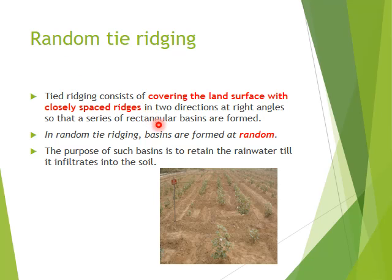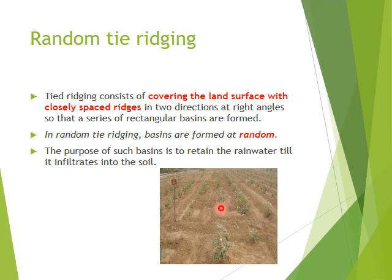The next one is random tie ridging. The word 'random' means without any orderliness. In random tie ridging, ridges are formed with the help of soil, and these ridges are connected — 'tying' means connecting — in a random manner. Small basins are formed with the help of these ridges, which are tied together to manage the flow of water, conserving water as well as controlling soil erosion.